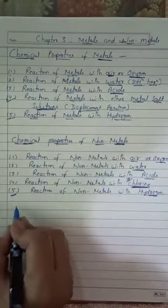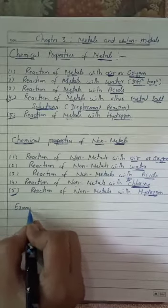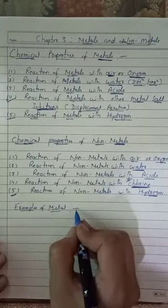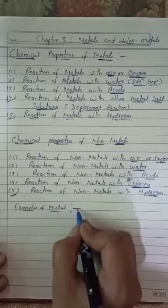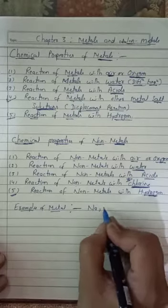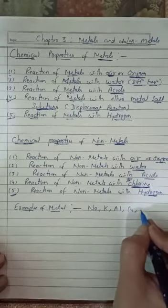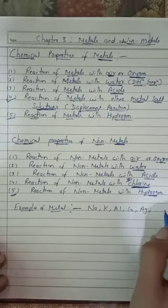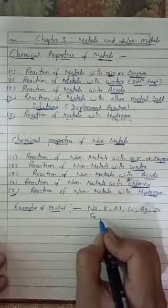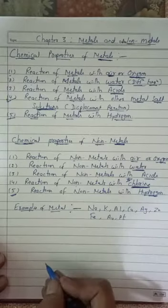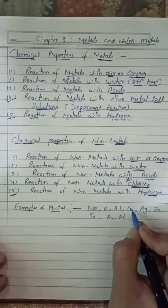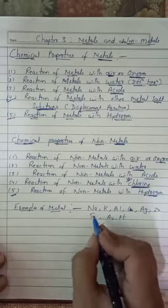For these chemical reactions, you need to collect samples of metals as listed under the heading of chemical properties of metals. You need to collect samples of sodium, potassium, aluminium, copper, silver, zinc, iron, gold, and platinum. These are all examples of metals. Whichever is available in your laboratory, at home, or in school, you can use any of these metals.